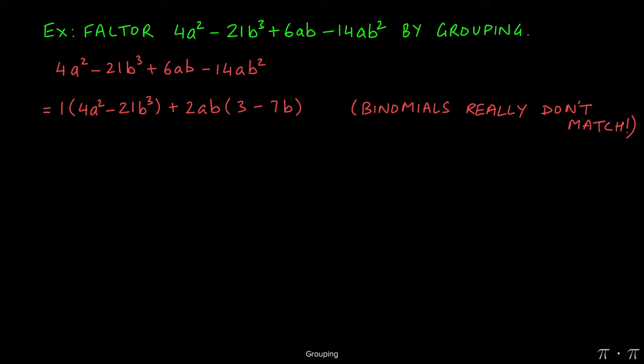Whenever we run into this, we have to abandon this approach and rearrange the problem by taking the second term in the question and moving it all the way to the end. So rewriting or rearranging this problem as 4a squared, we move this term all the way to the end, so the next term will be 6ab minus 14ab squared, and then finally minus 21b cubed. This rearrangement may result in a factorization or it may not, but we're always required to try it if the binomials are just completely different.